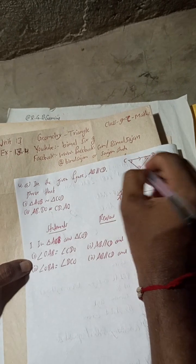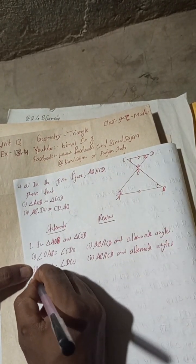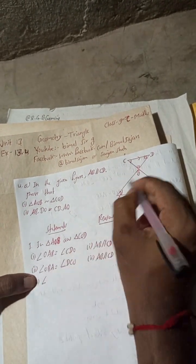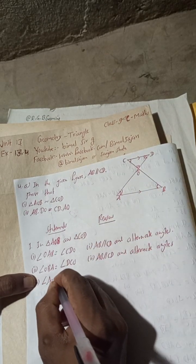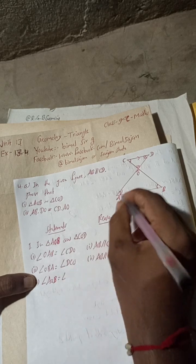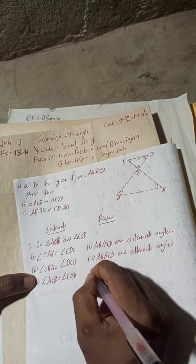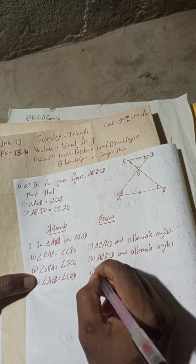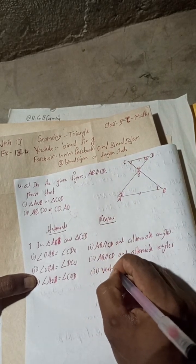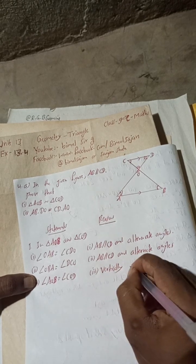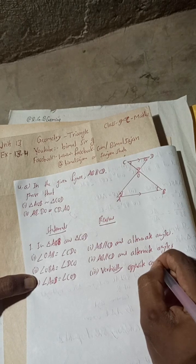Statement 3: Angle AOB is equal to angle COD. Reason: these are vertically opposite angles, and vertically opposite angles are equal.